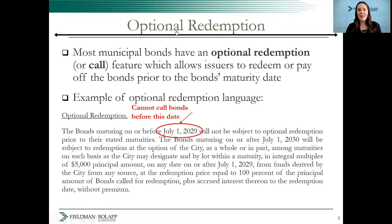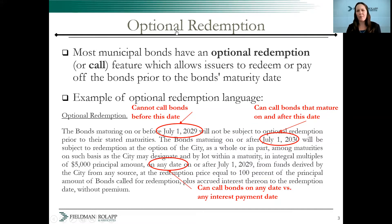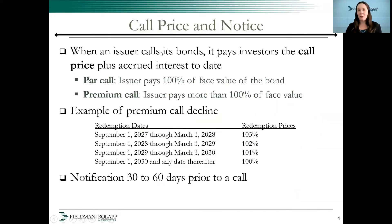This states that these bonds cannot be redeemed before July 1st, 2029, but those that mature on and after July 1st, 2030 could be called on any date after the 2030 call date. Some bonds can only be redeemed on any interest payment date. When an issuer redeems its bonds, it pays the investors a call price — face value plus accrued interest — and at that point stops making interest payments.